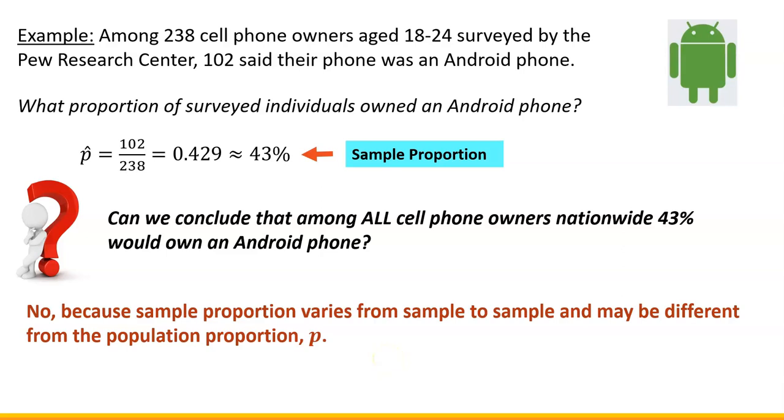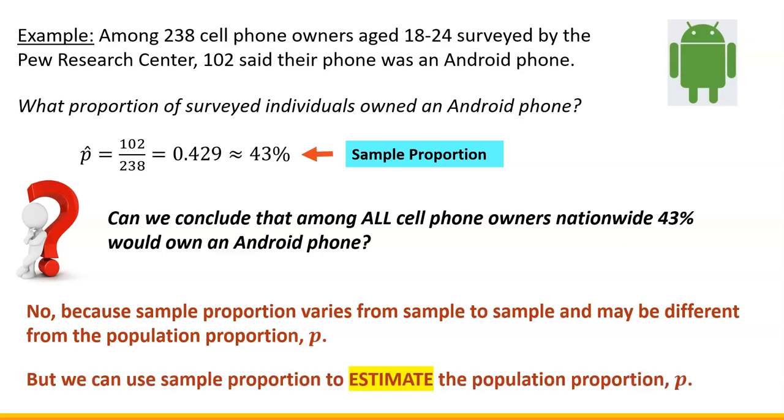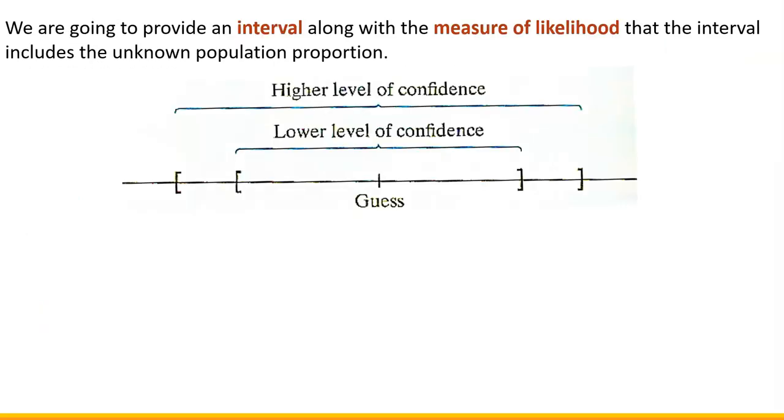But can we use sample proportion to get some idea about population proportion? Well we can. We can use sample proportion to estimate the population proportion. And because of that, sample proportion is also called point estimate. And now this is how it's done.